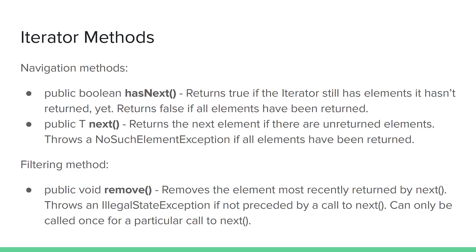Not all iterators support the remove method, but any collection that is mutable is expected to probably implement it. Immutable collections generally do not support remove. What remove does is remove the last element that was returned by a call to next. You can only remove that element one time, so remove can't be called twice in succession — every call to remove must have been preceded by a call to next. If you try to call remove without a preceding call to next, it will throw an IllegalStateException. Iterators that don't support remove will always throw an UnsupportedOperationException if you try to call it.